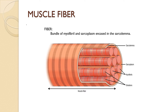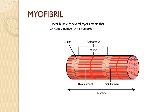Let's have a very close look at the muscle fiber. Skeletal muscle is cylindrical in shape with multi-nucleated muscle cells, known as muscle fibers. A fiber is a bundle of myofibrils and sarcoplasm encased in the sarcolemma. Skeletal muscle cells are united together by a highly organized internal arrangement. When we pull out a single muscle fiber we can find myofibrils.